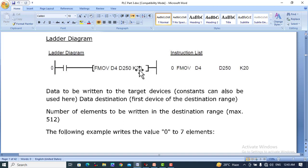With K20 it will move 20 D4 values to the destination starting from D250.